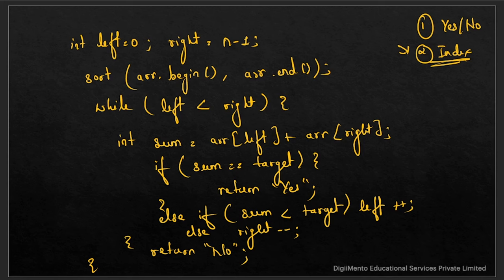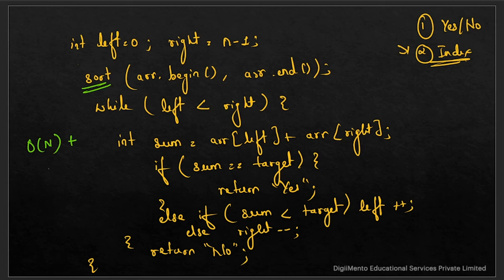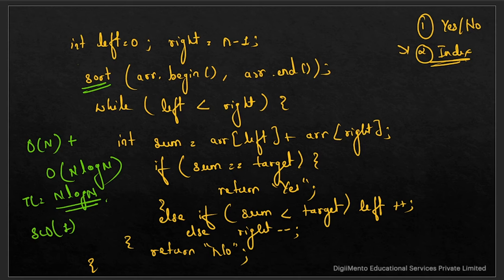Let's analyze the time complexity of the two-pointer approach. The while loop takes O(n). But sorting always takes O(n log n) — the best sorting technique takes O(n log n). So the overall time complexity is O(n log n). For space complexity, we haven't used any extra space, so it is O(1). However, if the question requires storing values in an auxiliary array, then space complexity would be O(n). The time complexity is the same as hashing at O(n log n), but if the interviewer says no hashing, this is the best optimal solution.